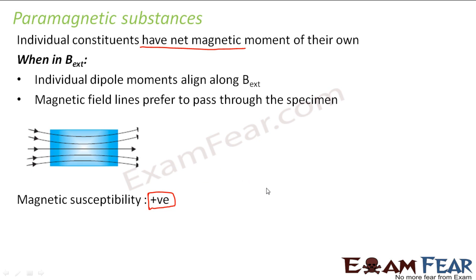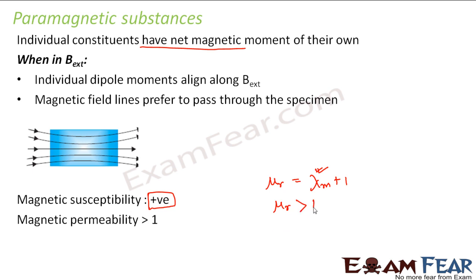So here we can say that mu_r equals chi_m plus one. Since chi_m is positive, some positive number is always added to one, which implies that mu_r will be greater than one. So in this case, magnetic permeability will always be greater than one, or mu will always be greater than mu-naught in case of paramagnetic substances.